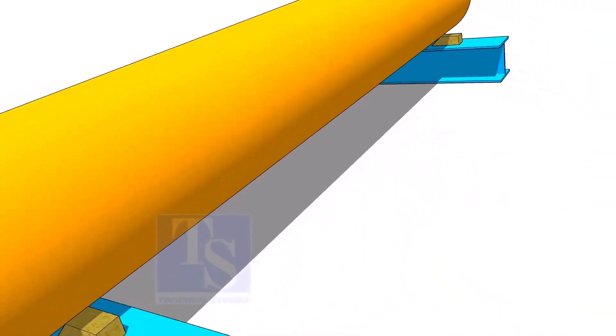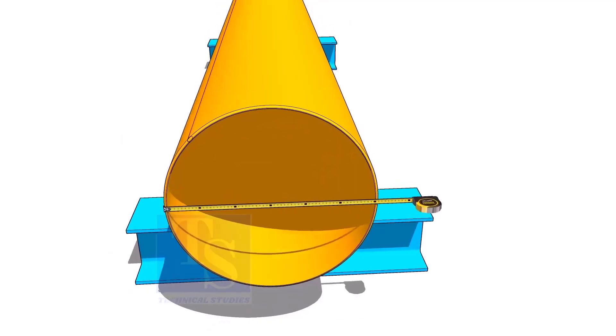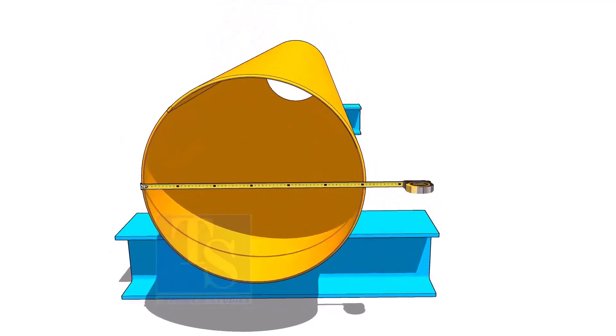Check the diameter of the pipe. If the thickness of the pipe is thin or the diameter is large, sometimes the pipe may be in an oval shape.